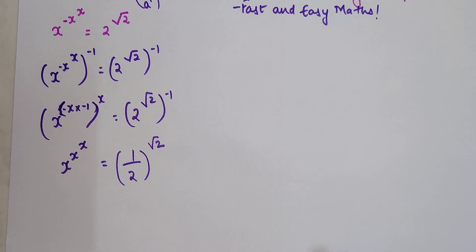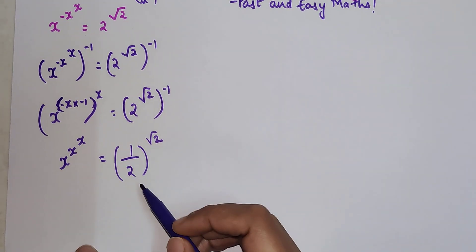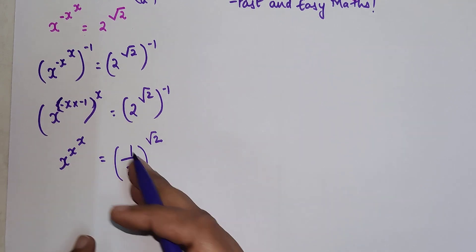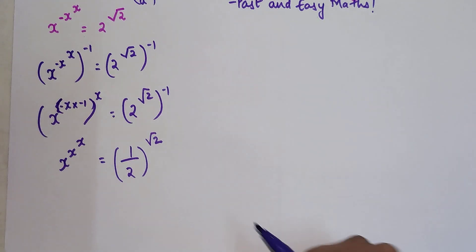This can be written as 1 upon 2, the whole raised to root 2. I hope till here you are absolutely clear. Now please look closely. We need something in the form of number raised to number raised to some another number as well.